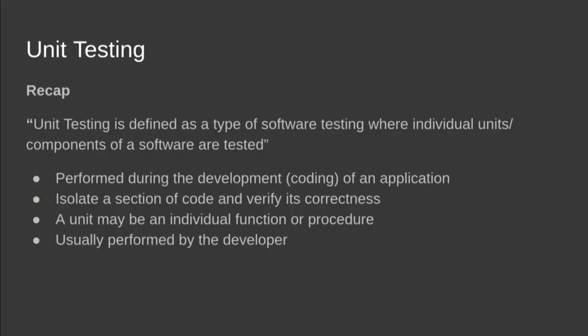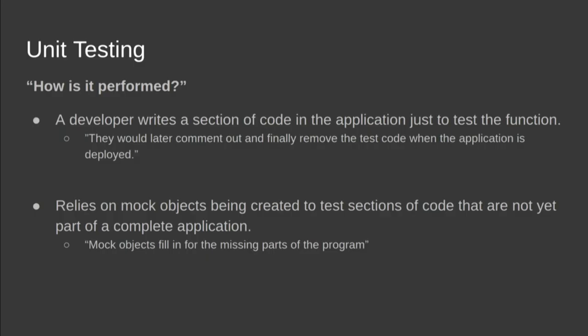Unit testing is performed during development. While the developer codes, they unit test each module to find bugs and verify that the module works independently. The key point is that other unit modules do not need to interact with it — it should work independently. A developer writes a section of code just to test that one part of the code, without touching the other code.